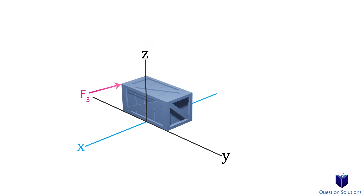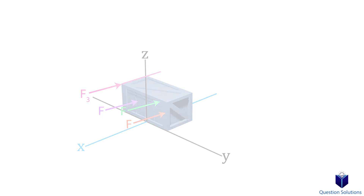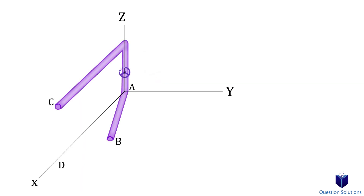Lastly we have force F3. Notice that by applying this force the box won't turn about the x-axis. That's because the line of action of this force is parallel to the x-axis. So anytime a force is parallel to the specified axis, it can't create a moment about that axis.